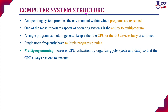Computer system structure is nothing but how the operating system will assign a job to the CPU and what are all the tasks it needs to perform when a job is executing with the CPU. Operating system provides an environment within which programs are executed. One of the most important aspects of an operating system is the ability to multi-program — that is, to select and assign multiple jobs to the CPU so that the CPU is always busy.